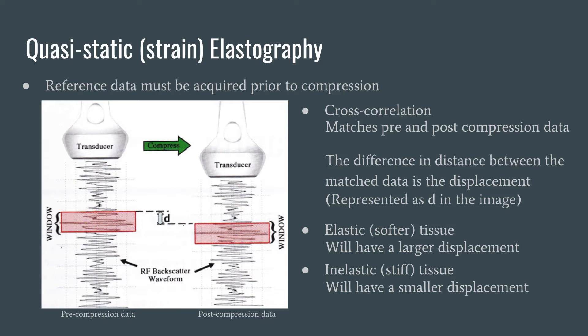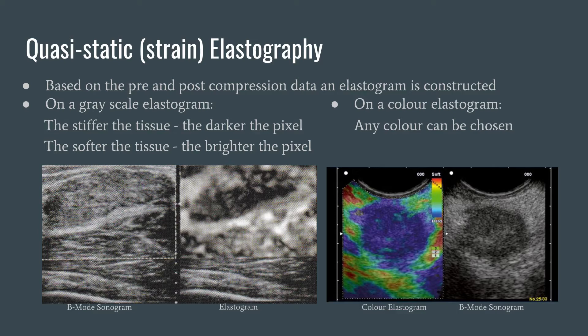Softer or more elastic tissue will have a larger displacement of data — they deformed and got squashed. How much they deform is known as strain. Stiffer or inelastic tissue will have a smaller displacement of data; they will not be as compressed, and the strain will be smaller. If we learned anything in the thousands of years of using palpation, stiff tissue is generally not a good thing. From this information, an elastogram — an image of tissue strain — will be made.